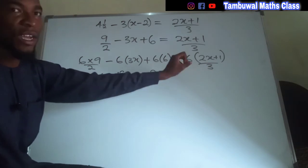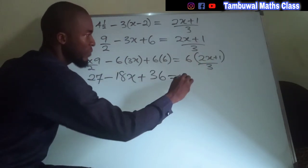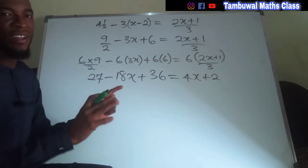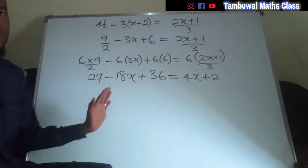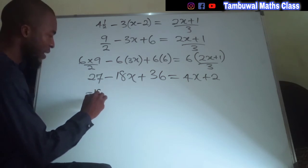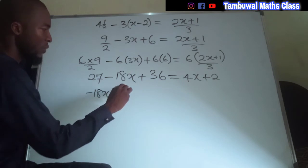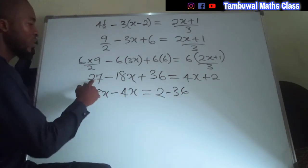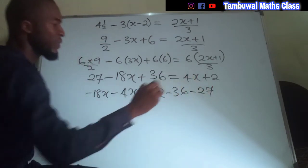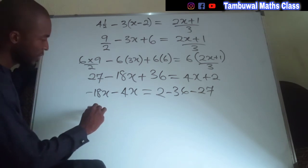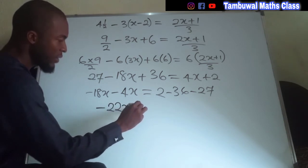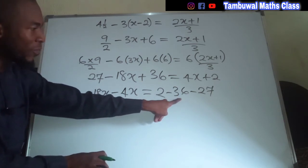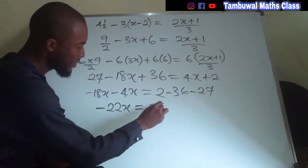Six divided by 3 is 2, and we use that 2 to expand the bracket: 2 times 2x is 4x, and 2 times 1 is 2. We now collect like terms, bringing all variable terms to the left-hand side and all constant terms to the right-hand side. We have negative 18x, then bringing 4x across gives negative 4x. On the right we have 2, then negative 36, then negative 27. So negative 18x minus 4x is negative 22x, and 2 minus 36 minus 27 is negative 61.